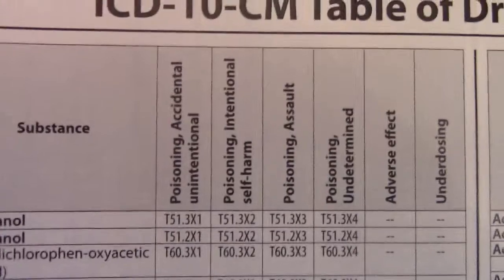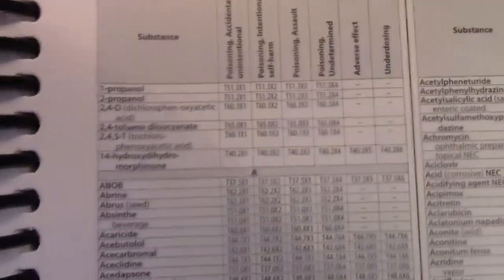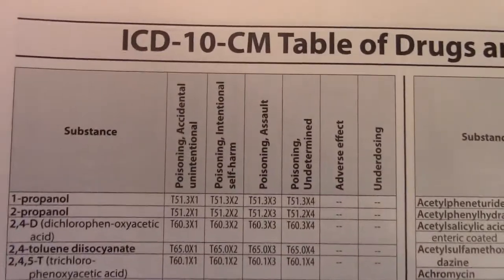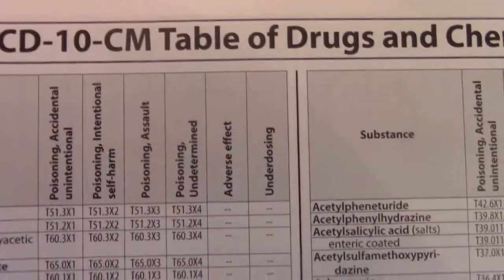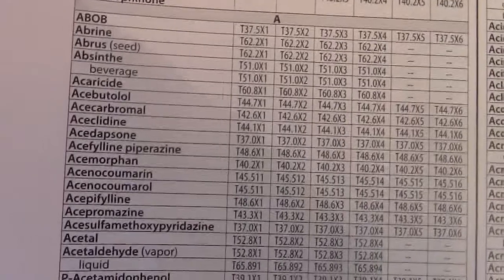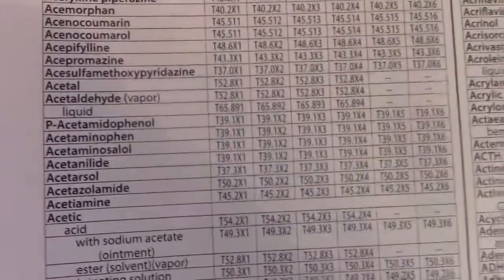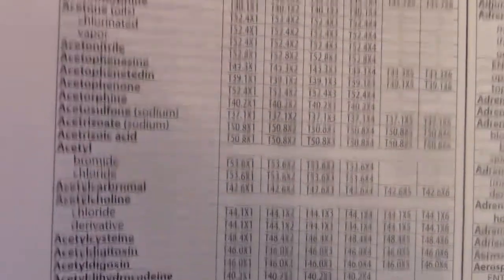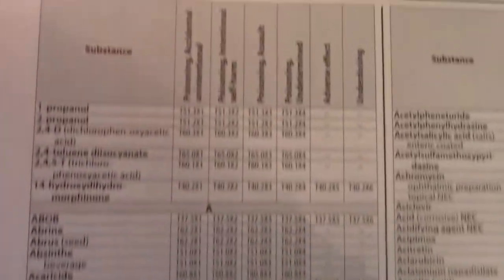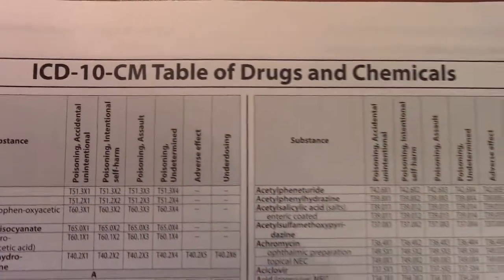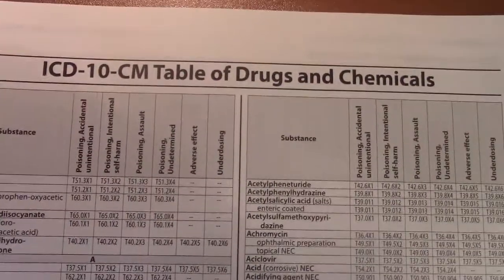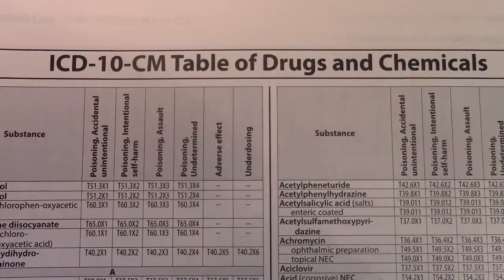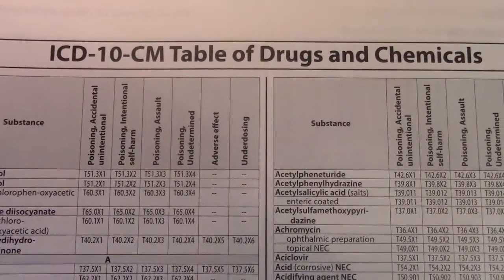Take some time and play with this table — you'll be amazed what all is in it, just like the table of external causes index. Take your time and get to learn your table of drugs and chemicals, so when your patients come in with these effects, you'll be able to identify: was it intentional, was it unintentional, was it an adverse effect, or was it actually underdosing?